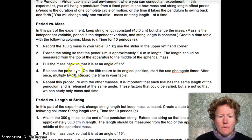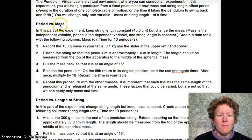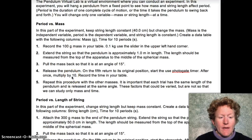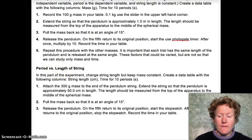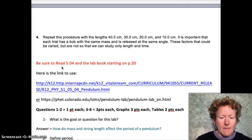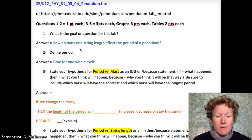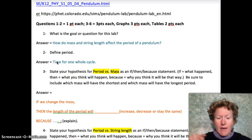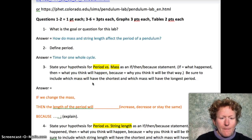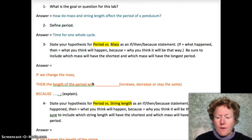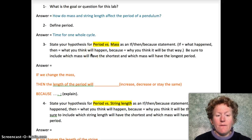In the first experiment, we're going to look at period versus changing the mass — how does changing the mass affect the time it takes to swing back and forth? In the second experiment, we'll look at how the length of the string affects the period. The goal for this lab is: how do mass and string length affect the period of a pendulum? Period is the time to swing back and forth, or one whole cycle.